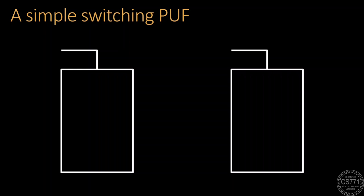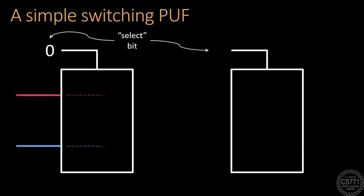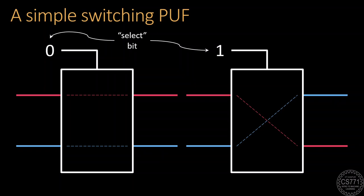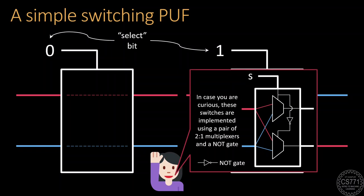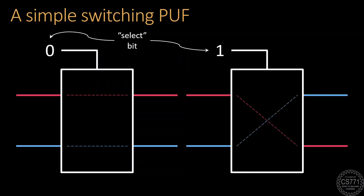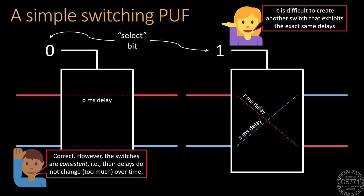To make these fingerprints harder to guess, experts came up with the idea of using switches as PUFs. Switches are very simple objects — they take in two signals and something called a select bit. If the select bit is 0, the switch simply lets the two signals pass through. However, if the select bit is 1, then the switch swaps the two signal paths. These switches are usually implemented using a pair of 2-to-1 multiplexers. What makes these switches unique are the delays that they introduce when passing the signals. If the select bit is 0, the upper signal is passed after a delay of P milliseconds and the lower signal after a delay of Q milliseconds. If the select bit is 1, the signals are swapped after delays of R and S milliseconds in the lower and upper paths respectively. Two switches will usually have distinct delays, but the delays for a switch usually stay the same over time.